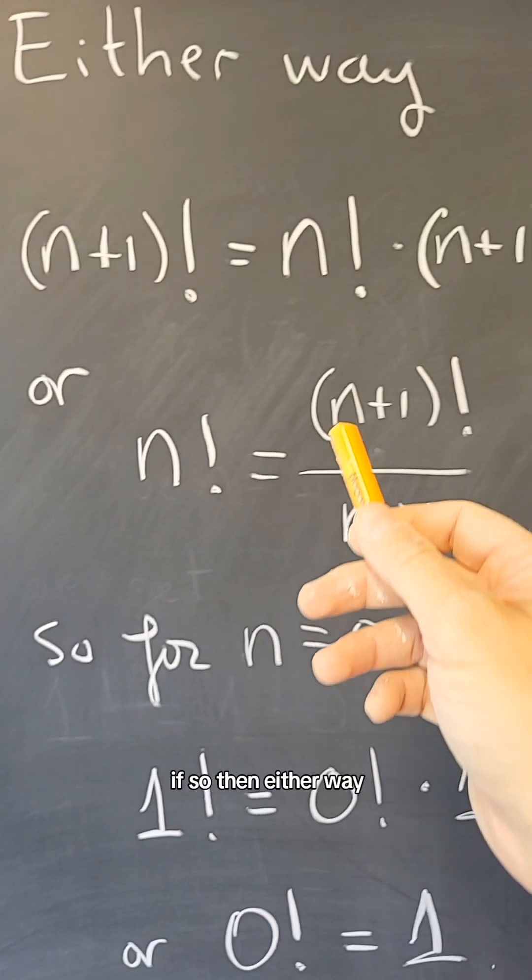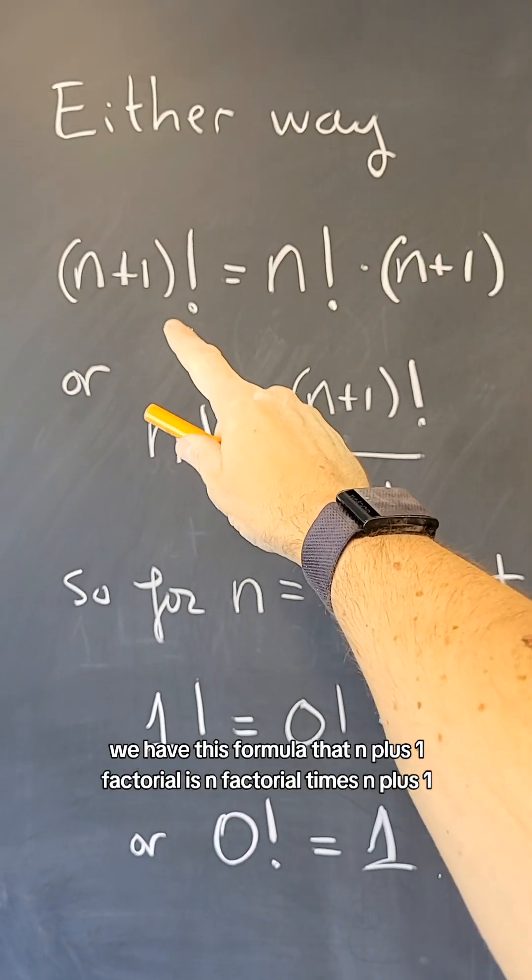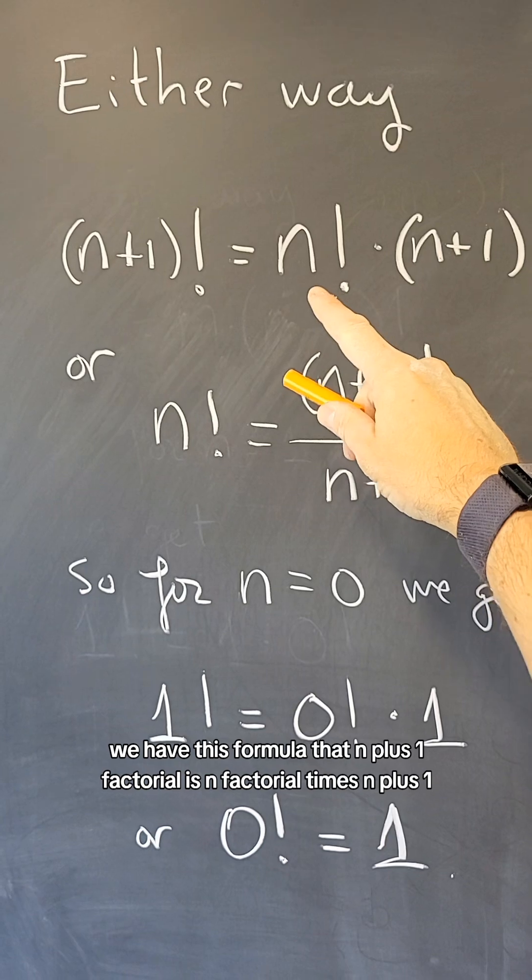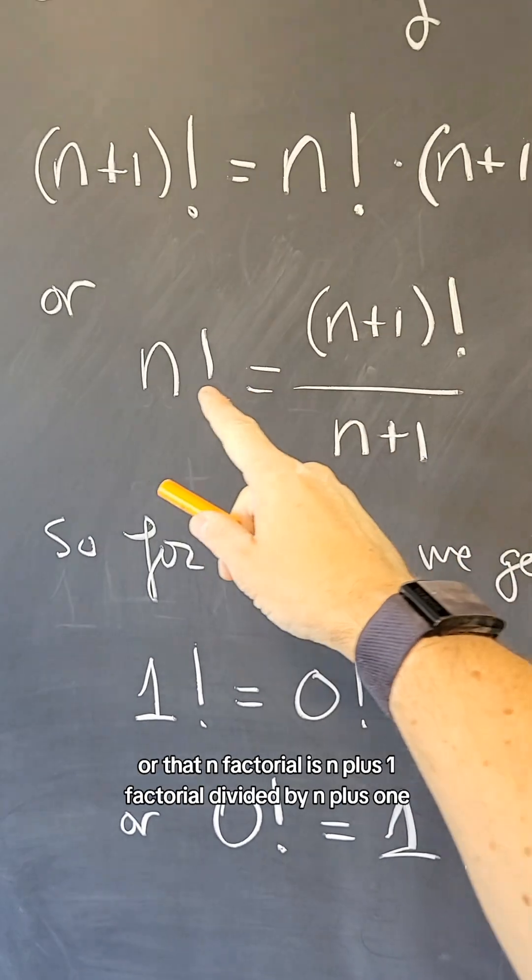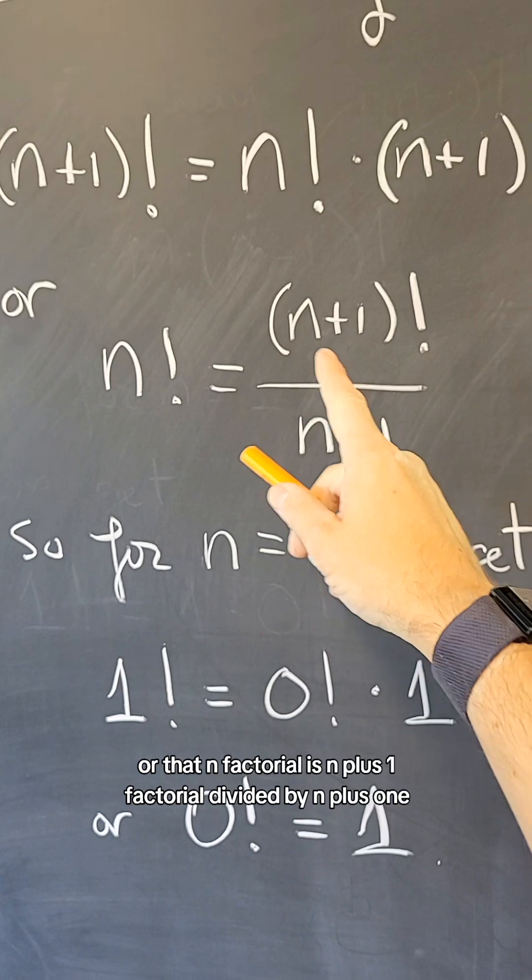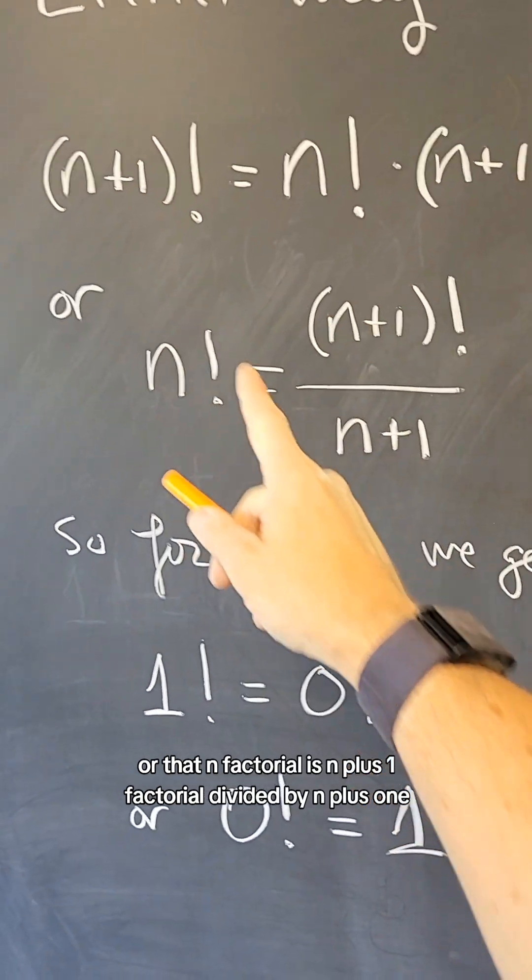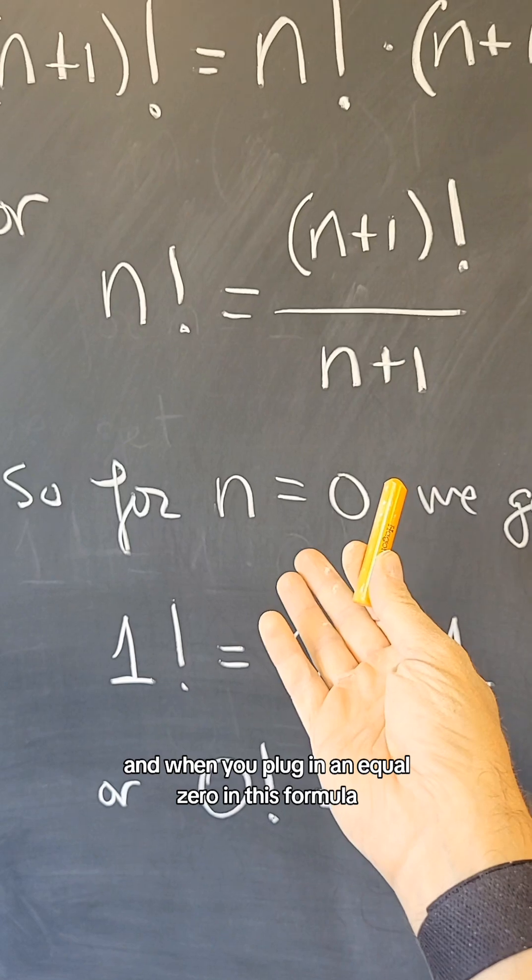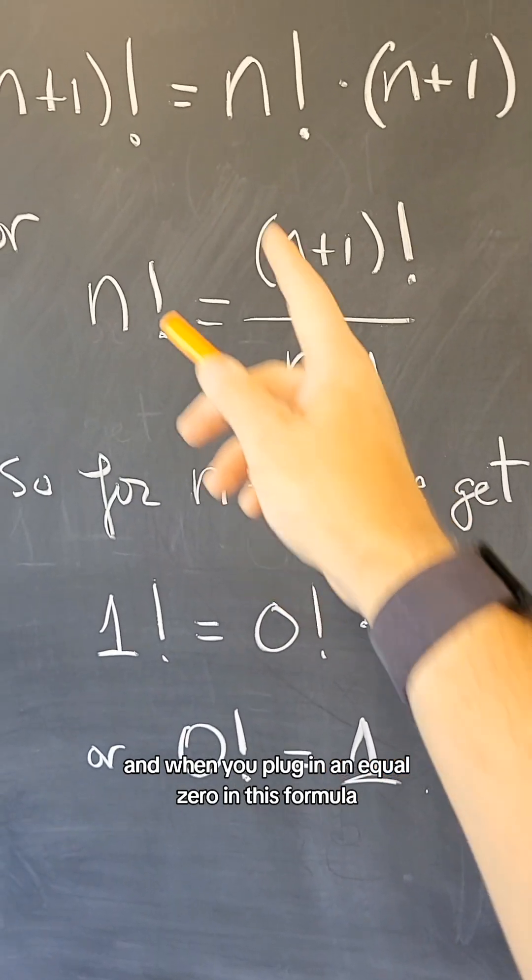If so, then either way we have this formula that n plus 1 factorial is n factorial times n plus 1, or that n factorial is n plus 1 factorial divided by n plus 1. And when you plug in n equals 0 in this formula,